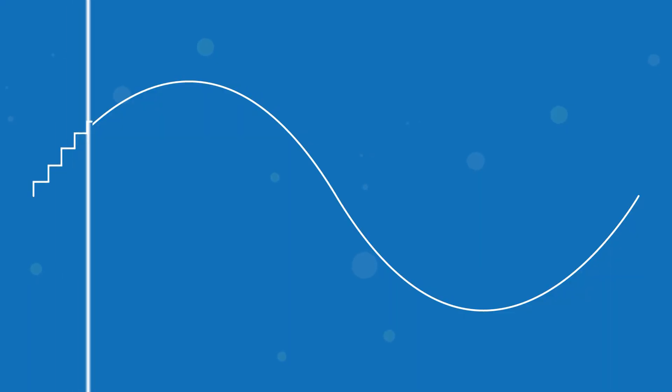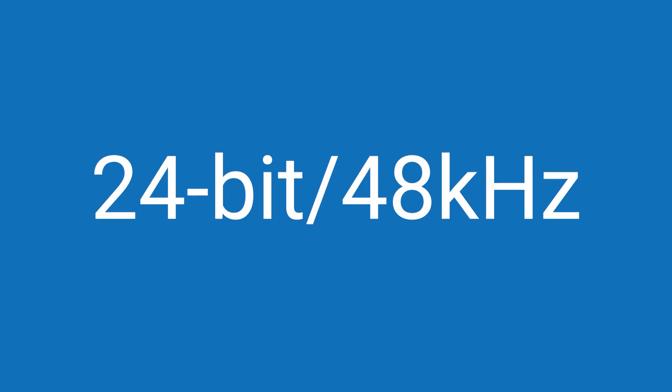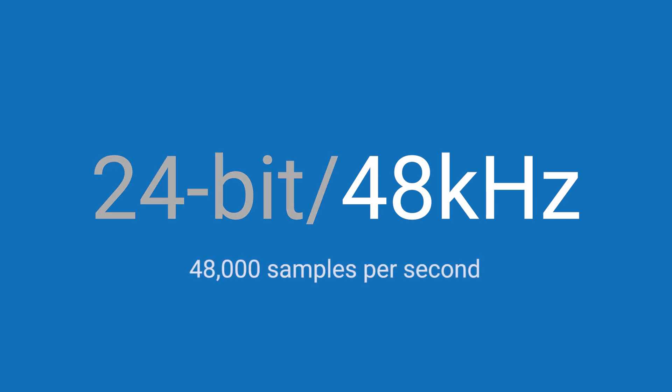To put that more simply, essentially your computer takes multiple snapshots of an incoming audio signal, and it converts it into a digital signal that your computer can understand. Audio frequencies are measured in hertz, or cycles per second, so an audio file that's 24-bit 48 kHz means that it's sampled 48,000 times per second.